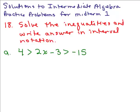We're starting with number 18 of the solutions to the practice problems for intermediate algebra midterm 1. Solve the inequalities and write answer in interval notation, number a. So this is a compound inequality. It says 4 is greater than 2x minus 3, which is then greater than negative 15.